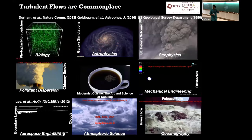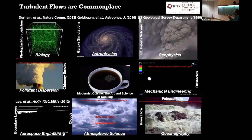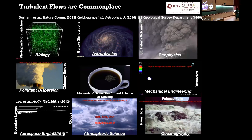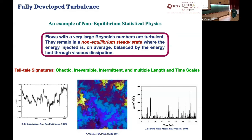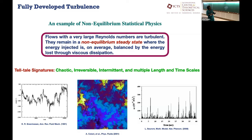Since this is not a turbulence audience, let me spell out what I mean by real turbulence — high Reynolds number turbulence. Turbulent flows are commonplace; most flows in nature are turbulent. Fully developed turbulence has these telltale signatures: they are chaotic, irreversible — because there's finite viscosity — intermittent, and they have multiple length and time scales.